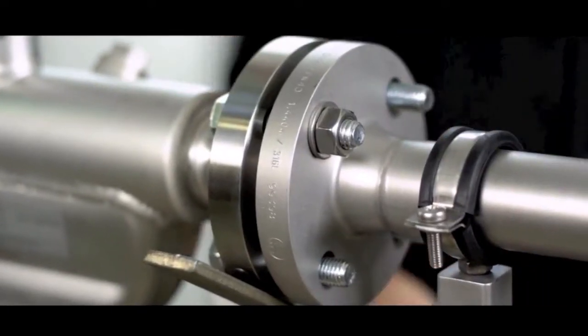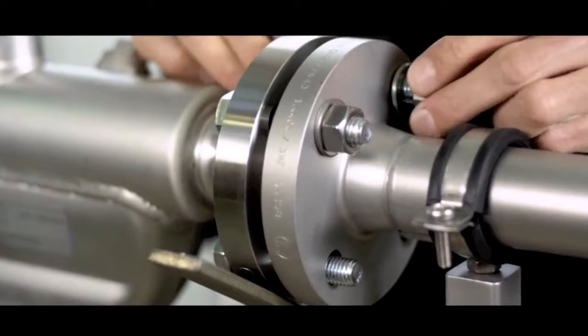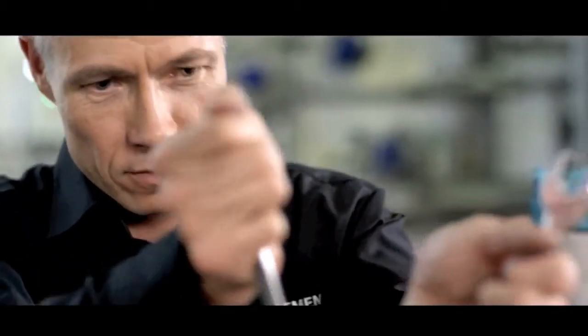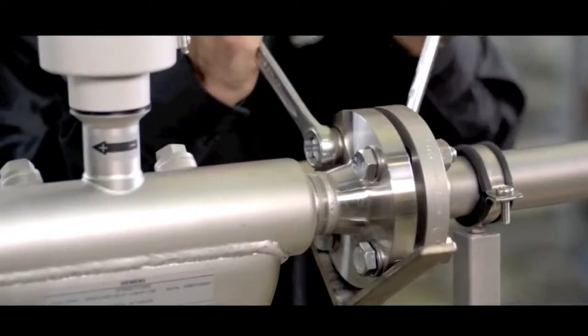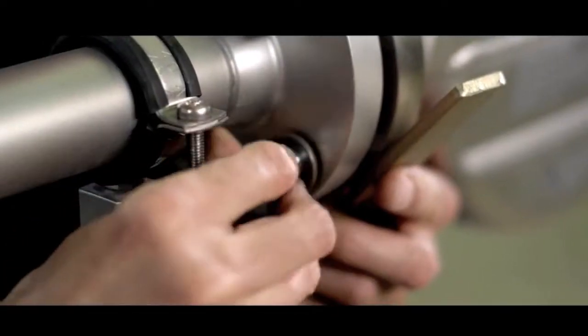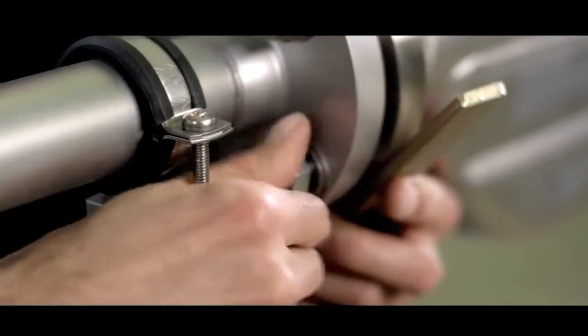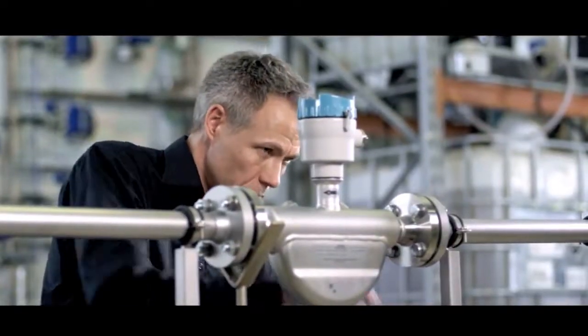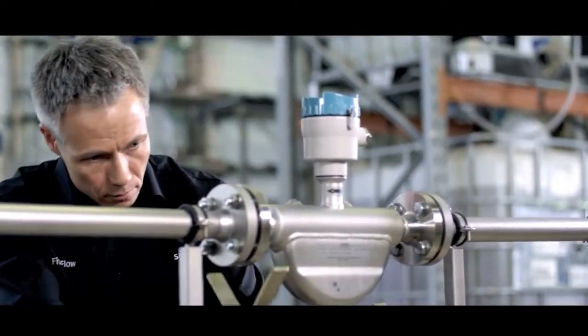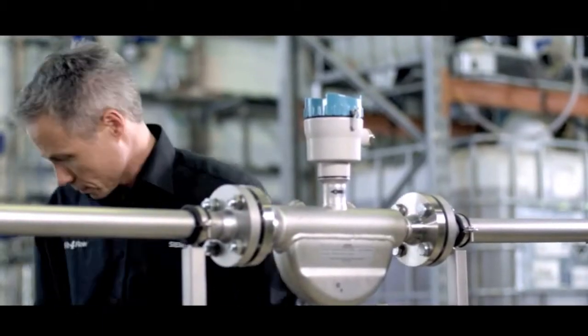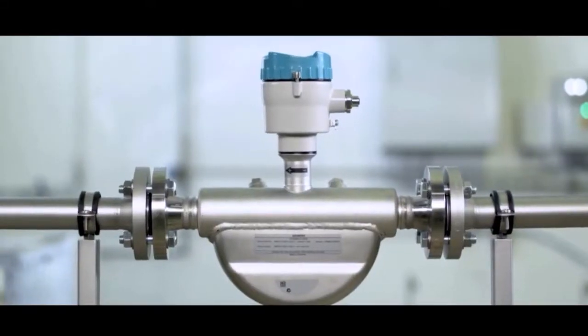Then insert the top bolts and tighten the nuts evenly. Repeat the process at the other end. Then remove the pipe support. Finally, check that everything is correctly connected. The sensor is now mounted.